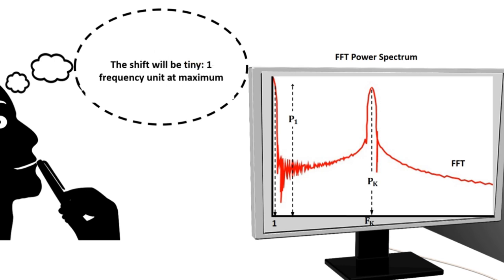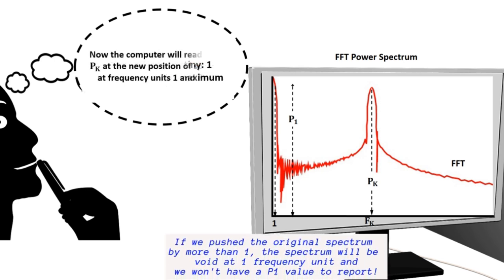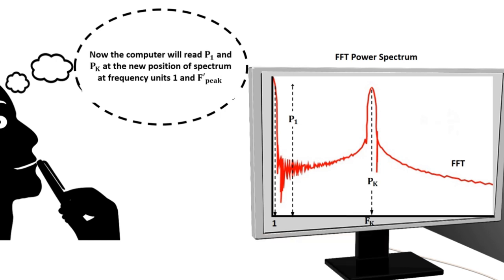The shift will be tiny. One frequency unit, at maximum. Now, the computer will read p1 and pk at the new position of the spectrum, at frequency units one and the new frequency of the peak.